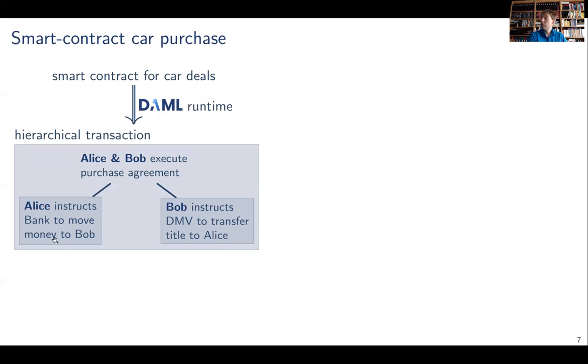In the case for a smart contract deal, we essentially have two legs. First leg, Alice instructs the bank to move the money to Bob. And in the second leg, Bob instructs the department of motor vehicles to transfer the car title to Alice. And then there is, of course, the framing part, which makes up actually the purchase agreement that ties the two legs together. This is called a transaction because we want the whole thing to execute atomically. That is, either both legs execute or none of them, such that neither of the two can end up without a car and without money. And so that's to reduce the counterparty risk. It's hierarchical in the sense that each leg could be a transaction on its own. And this hierarchical structure allows us to compose complex workflows from simple building blocks.